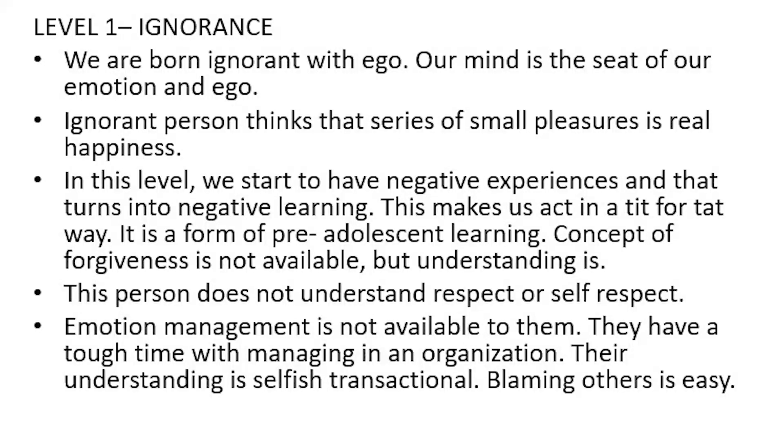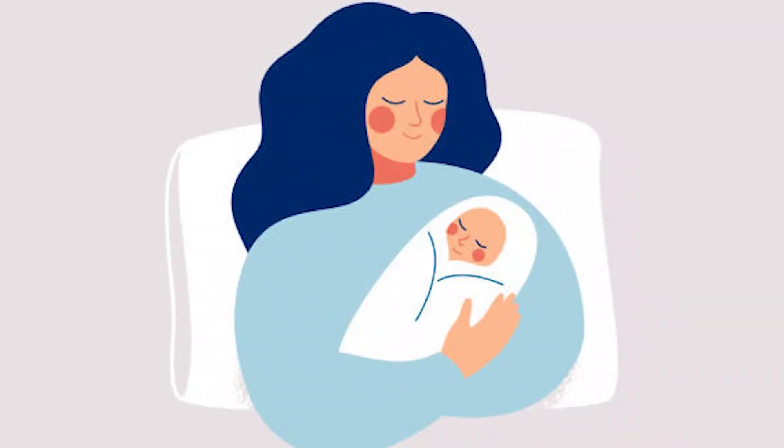Today we're going to talk about ignorance. In ignorance, you are living as you are kind of born — you are born ignorant, born in a system where your basic drive is your mind. We use 'mind' here in the Sanskrit sense, which is called 'man.' In this definition, the mind is the seat of your emotion and ego — everything that your emotional engine and ego do. That part of your brain is called the mind, or man, and it exists even in animals that have no intellect.